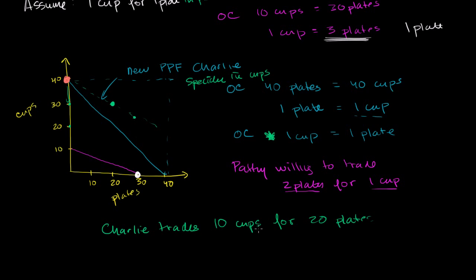In the same scenario, Patty traded 20 plates for 10 cups — so she's down to 10 plates but gained 10 cups. That puts her right over here, once again beyond her production possibilities frontier. So this is a pretty good situation for Patty as well.